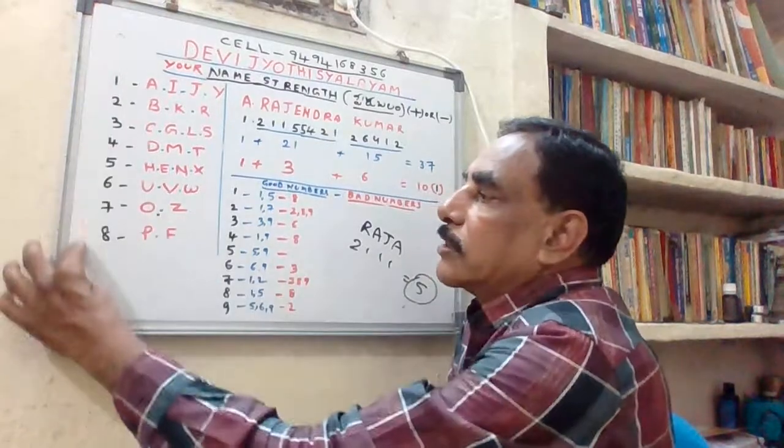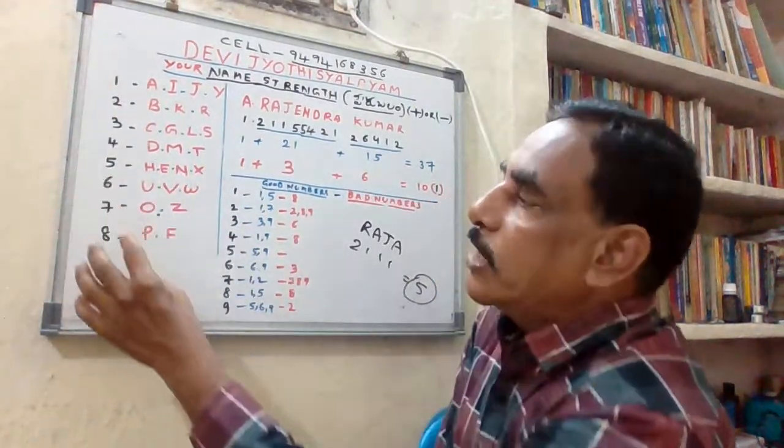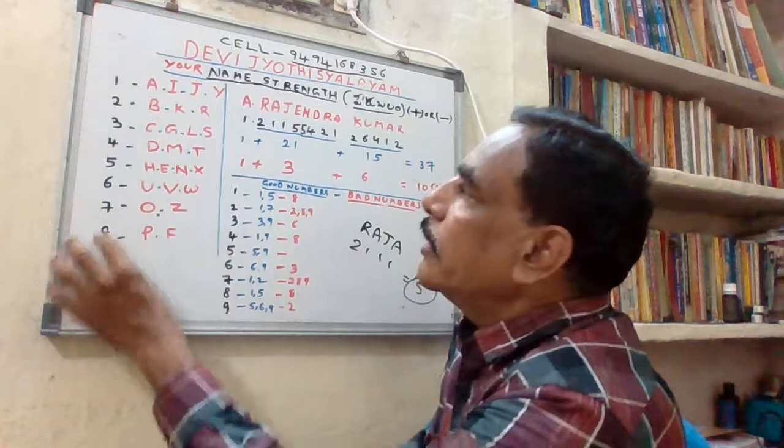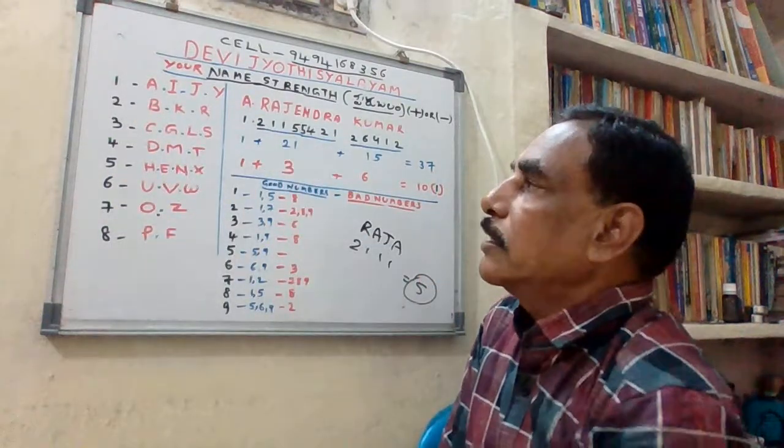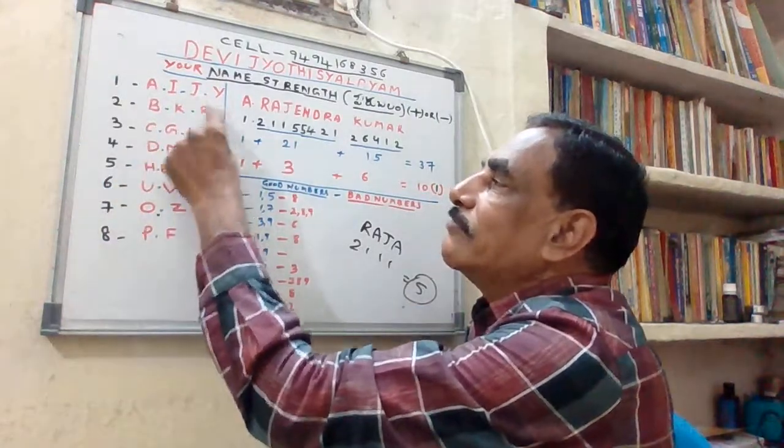Here are numbers 1 through 8, and here are English alphabets. Number 1 represents A, I, J, Y.